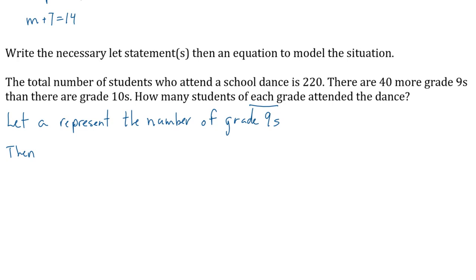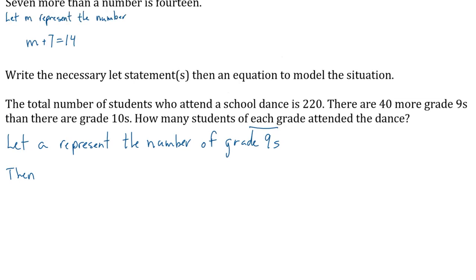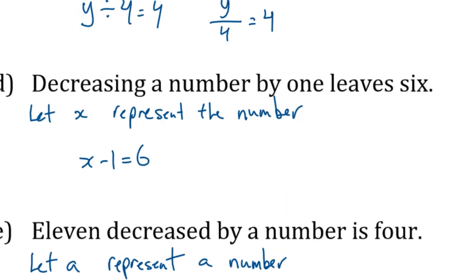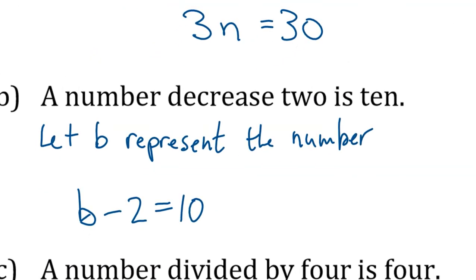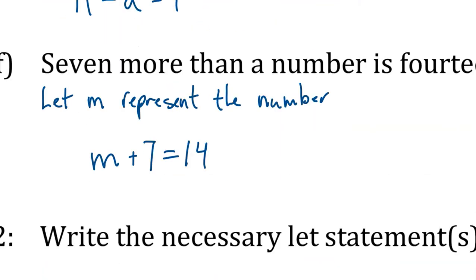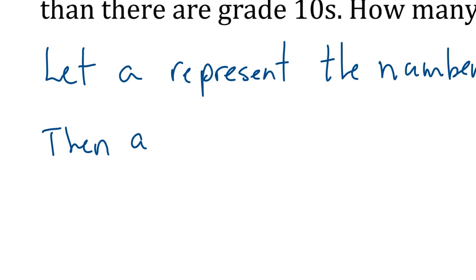Now, we have to do a second let statement. Then, if there are 40 more grade nines, what do I write for the number of grade tens? This can be a little bit tricky. 40 fewer than the number of grade nines. A number decreased 2 is 10. So a number decreased 2. If A is the number of grade nines and we're decreasing it by 40, there's 40 fewer, there's 40 less. So A minus 40 is the number of grade tens.